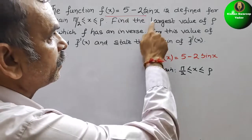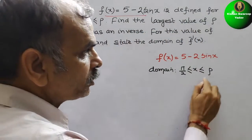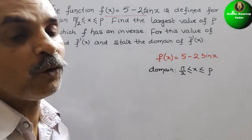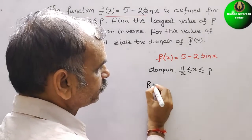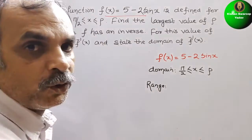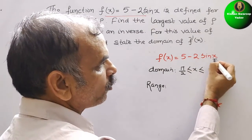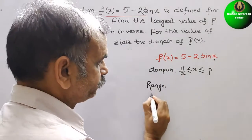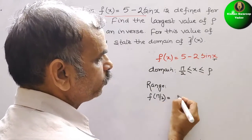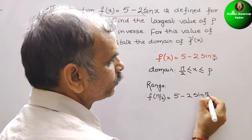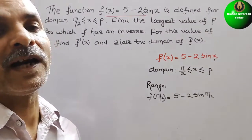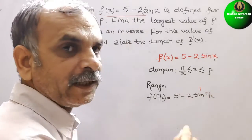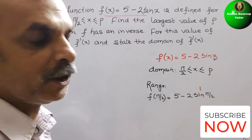We need to find the largest value of p, so we look at the range. We substitute π/2 in place of x. f(π/2) = 5 - 2sin(π/2). Since sin(π/2) = 1, we get 5 - 2×1 = 3.